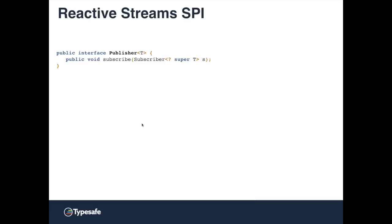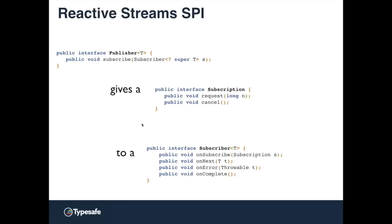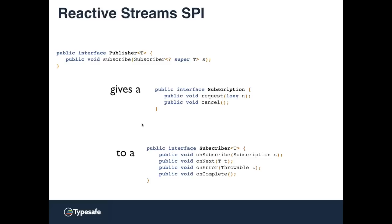The SPI looks like this: we have a Publisher with a subscribe method; the subscriber can subscribe to a publisher, and the publisher then gives the subscriber a Subscription. The subscription is a shared secret and a way of communicating between the publisher and subscriber. Whenever I said 'signaled demand,' I mean the subscriber, because it has the subscription, calls the request method, which signals demand to the publisher.